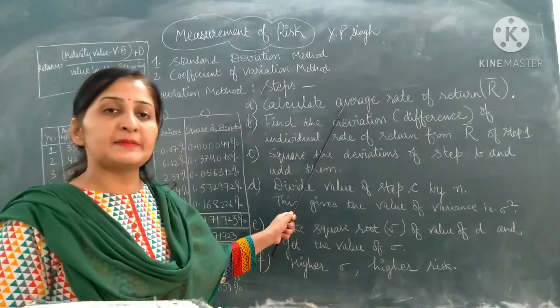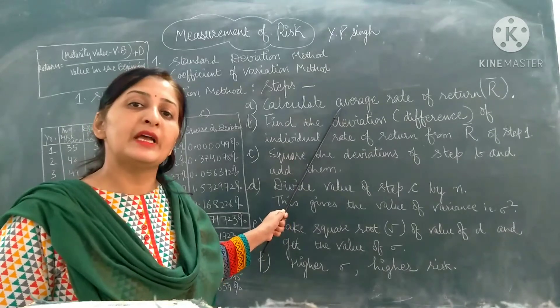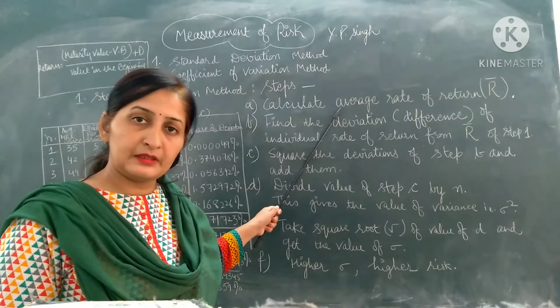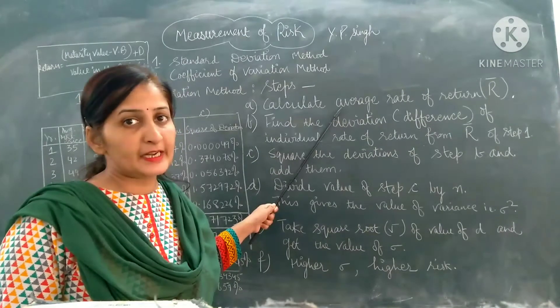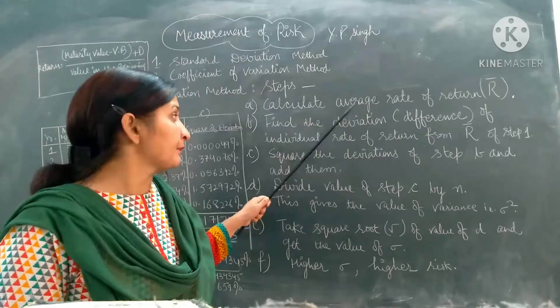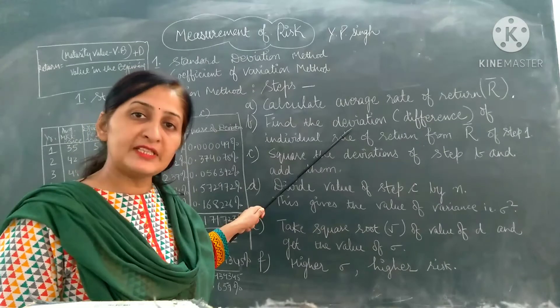The very first step says to calculate the average rate of return, which we discussed in our return video. We calculate individual security returns in different time periods and then find out the average return. Next step is to find out the deviation or difference.